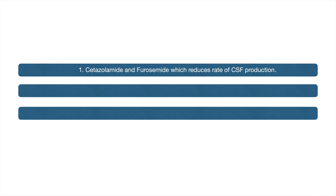Treatment can be done by acetazolamide and furosemide, which reduce the rate of CSF production. Endoscopic third ventriculostomy (ETV) is another option. Extracranial shunts are also used.